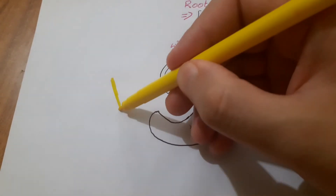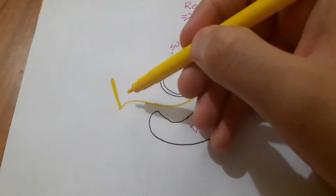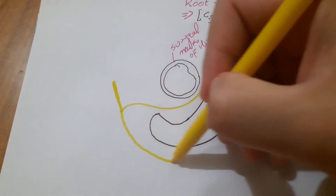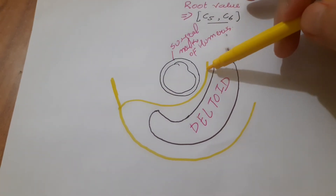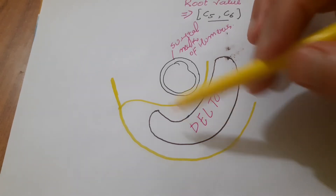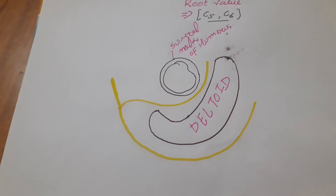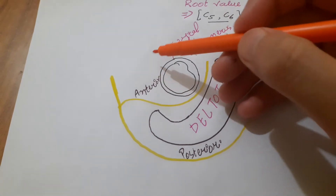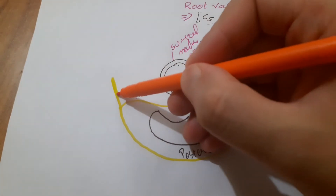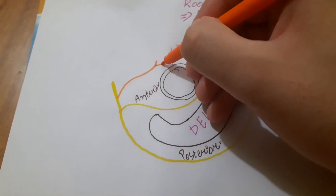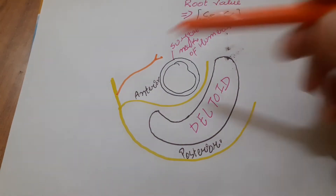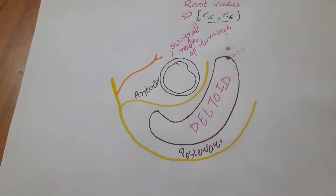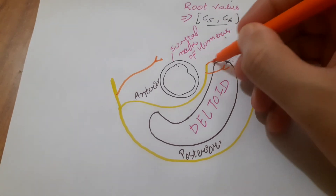The two divisions are: one is the anterior division and the other is the posterior division. From the main nerve trunk, it gives a branch to the shoulder joint, and then divides into anterior and posterior divisions. The anterior division supplies the deltoid muscle.